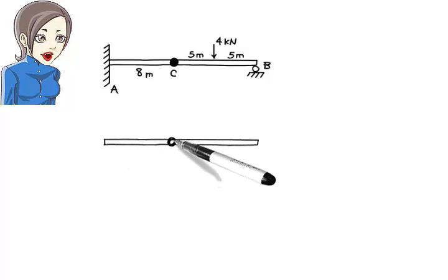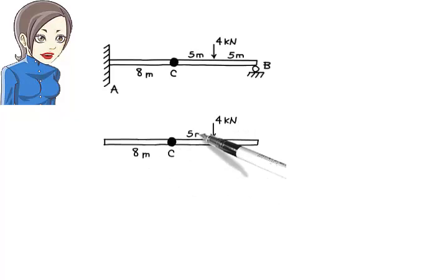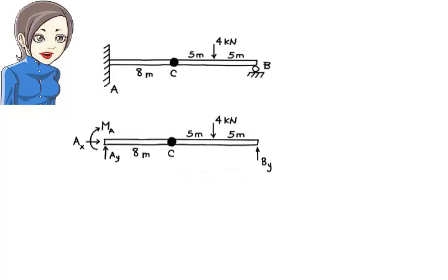The structure has four unknown support reactions, three at the fixed end and one at the roller end. Although we can write three equilibrium equations for the entire structure, we cannot solve them for the unknowns, because we have only three equations but four unknowns. Does this mean the structure is statically indeterminate?